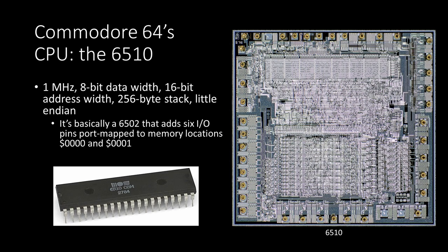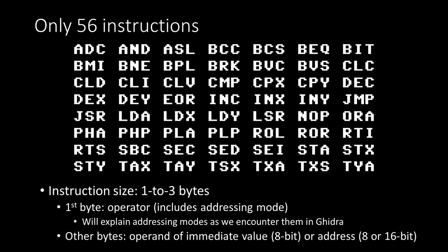The 6510 on the Commodore 64 is a 6502 with just some extra IO pins on it. The chip ran at 1 MHz. The data width is 8-bit, so the registers can only count up to 255 before wrapping back around to zero. It's 16-bit addressing width, has a 256-byte stack, and it's little-endian, meaning the least significant byte comes before the most significant byte when constructing addresses. This is a simple chip — there are only 56 instructions.